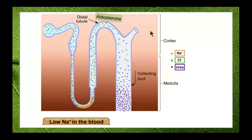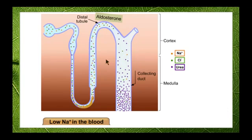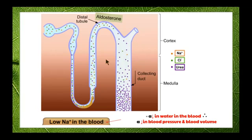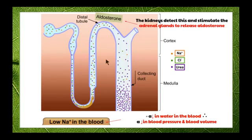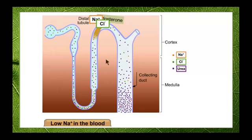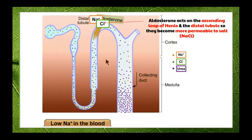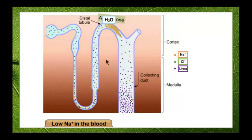In the diagram, we have the nephron with the distal tubule labelled, and the ascending loop of Henle — the part going up. In this picture, we have low sodium levels in the blood. Low sodium levels also lead to a decrease in water in the blood and therefore a decrease in both blood pressure and blood volume. This is detected by the kidneys, which stimulate the adrenal glands to release aldosterone. Once aldosterone does its job, the ascending loop of Henle and the distal convoluted tubule both become more permeable to salt, so sodium and chloride — most commonly sodium — move out of the nephron back into the surrounding tissues.